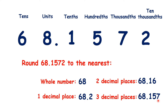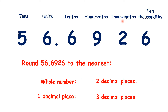So you can see the pattern: if we round to one decimal place, we're rounding to the nearest tenth; if we round to two decimal places, we're rounding to the nearest hundredth; and for three decimal places, it's the nearest thousandth. Pause the video and see if you can round this number to the nearest whole number and to one, two, and three decimal places.